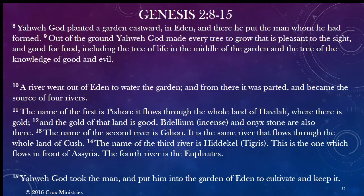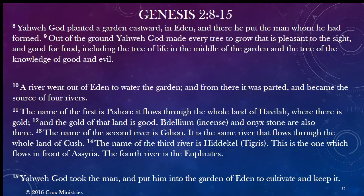Let's look at the first paragraph: 'Yahweh God planted a garden eastward in Eden and formed every tree to grow that is pleasant to the sight.' Notice how this plays off the previous paragraph — before the trees grew, there was no man, then God makes man and God makes the trees grow. This is typical Hebrew poetic paralleling. The two important trees are the tree of life and the tree of the knowledge of good and evil.